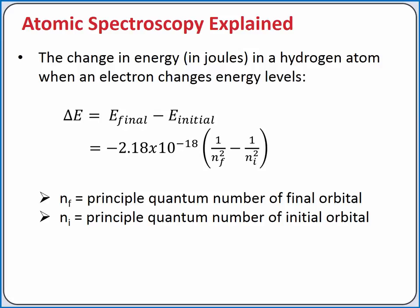The change in energy is measured in joules. If the change in energy for the electron is positive, the electron has absorbed energy. This means the electron will have jumped from a lower energy level to a higher energy level.